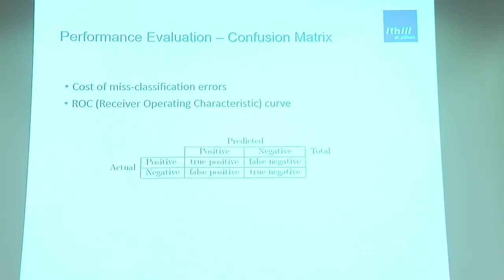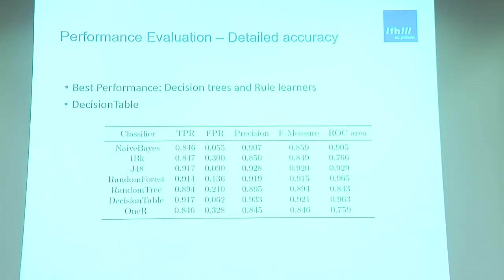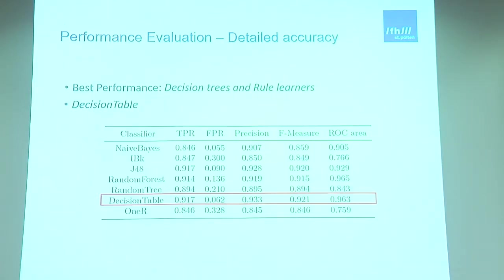To actually select the best algorithm to use, we need some kind of figure of merit. For binary classifiers, we use the well-known metrics like the confusion matrix and the receiver operating characteristic curve. There we see — fast-forwarding a bit — that the decision table actually worked the best. The closer the number is to one when measuring the true positive rate, the better.